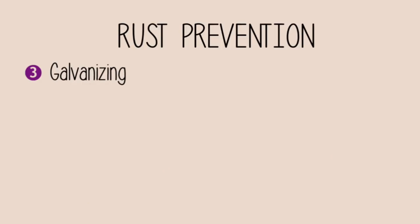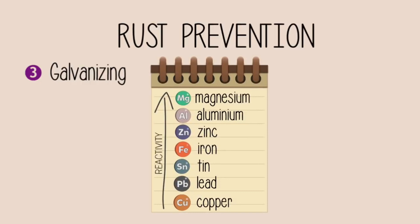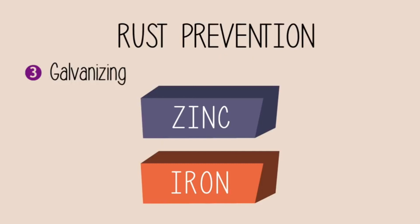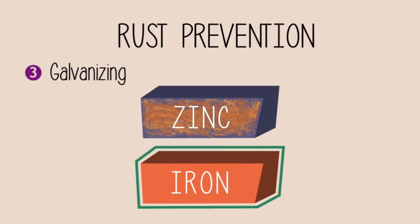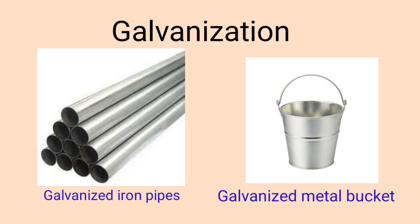The third method is galvanization, also known as the sacrificial method. Looking at the reactivity table, zinc is more reactive than iron, so when exposed to oxygen and moisture, zinc corrodes faster than iron. When iron and zinc are put together, a thin layer of zinc protects the iron object by sacrificing itself — hence it is called a sacrificial process. This is applied to iron pipes, buckets, and drums in our homes.